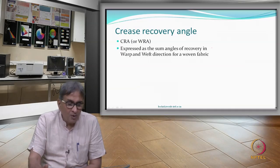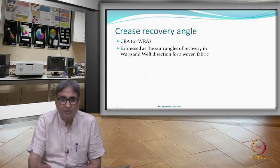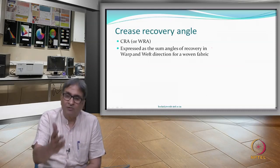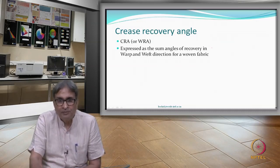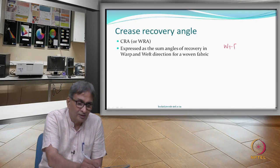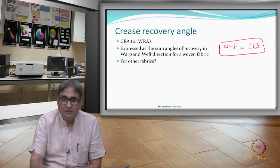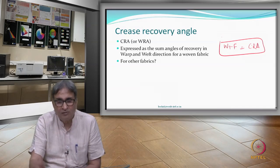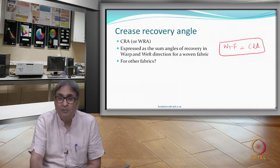The CRA is expressed as the sum of angles of recovery in warp and weft directions for a woven fabric. You measure separately the recovery in warp direction and weft direction and add them. For knitted fabrics you talk about courses and wales. For nonwovens, you talk about machine direction and cross to the machine direction, and that is how you can measure and report the values.